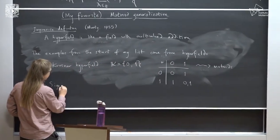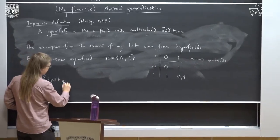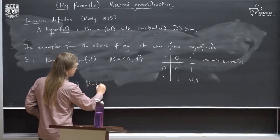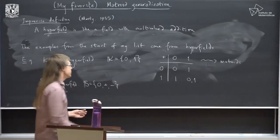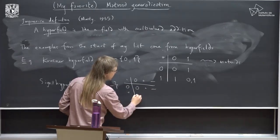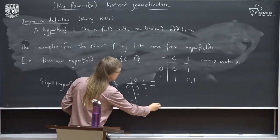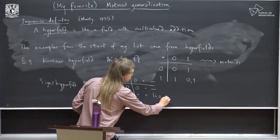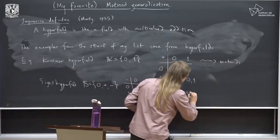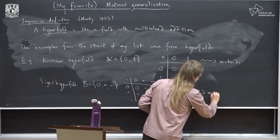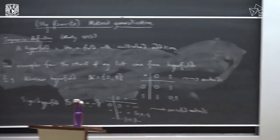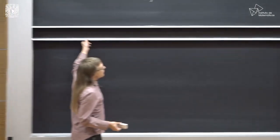Or you can use the hyperfield of signs: reals modulo positive reals. Addition: zero plus anything is anything, positive plus positive is positive, negative plus negative is negative, positive plus negative could be any sign. The point of the theory is that even though these hyperfields have very weak algebraic structure, the parts of algebraic geometry needed to do the foundations of matroid theory still work.